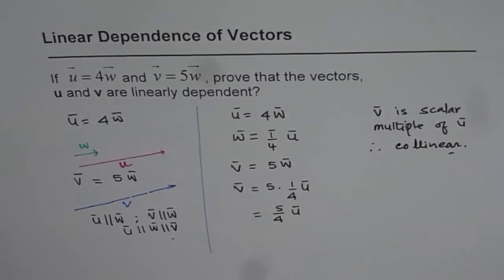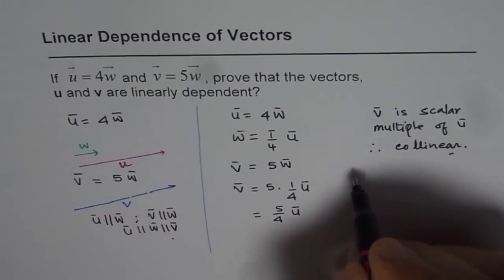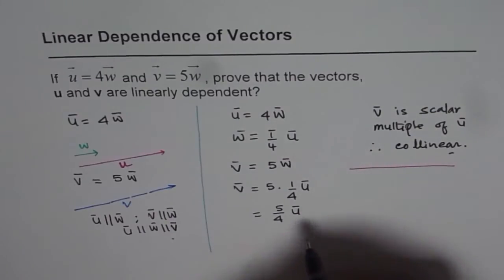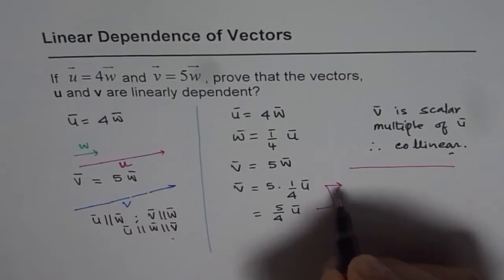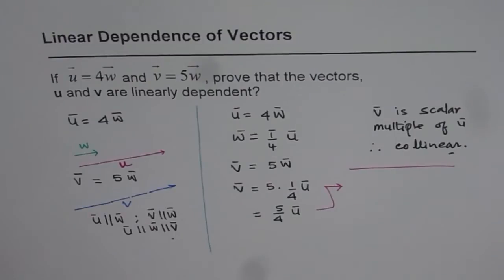That is the second property which we learned, which could be used to show that the vectors are collinear. Let me rewrite this equation in a different way so that I can show you other ways of proving that the vectors are indeed collinear.